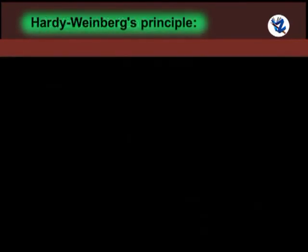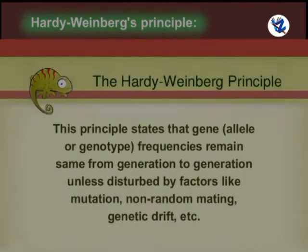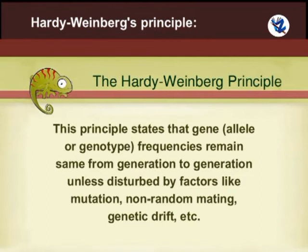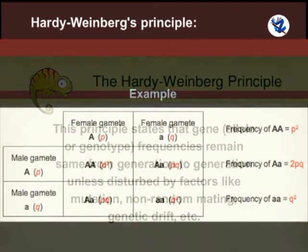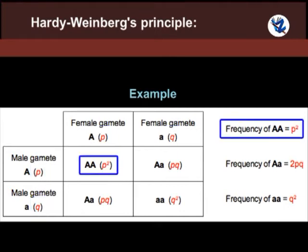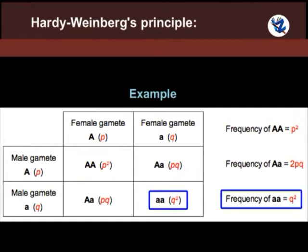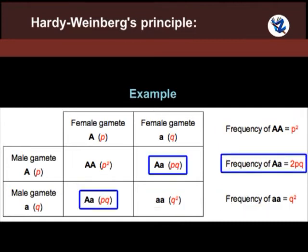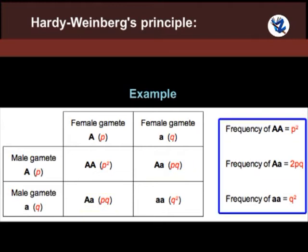Hardy-Weinberg principle: The principle states that gene — that is, allele or genotype — frequencies remain the same from generation to generation unless disturbed by factors like mutation, non-random mating or genetic drift. Taking two alleles of a single locus, capital A and small a, with frequencies p and q respectively: the frequency of AA is p², of aa is q², and of Aa is 2pq.